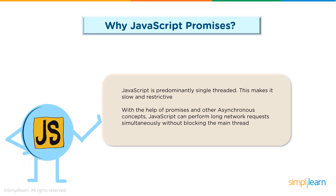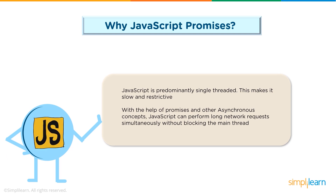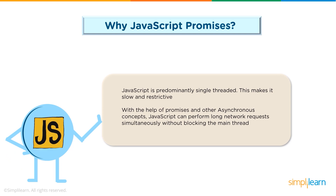To overcome these drawbacks, asynchronous programming came into picture. In this case, the main thread continues its execution while JavaScript allows long network requests and other tasks to happen simultaneously. With the help of features like callbacks, promises, and async/await, asynchronous programming can be easily achieved.